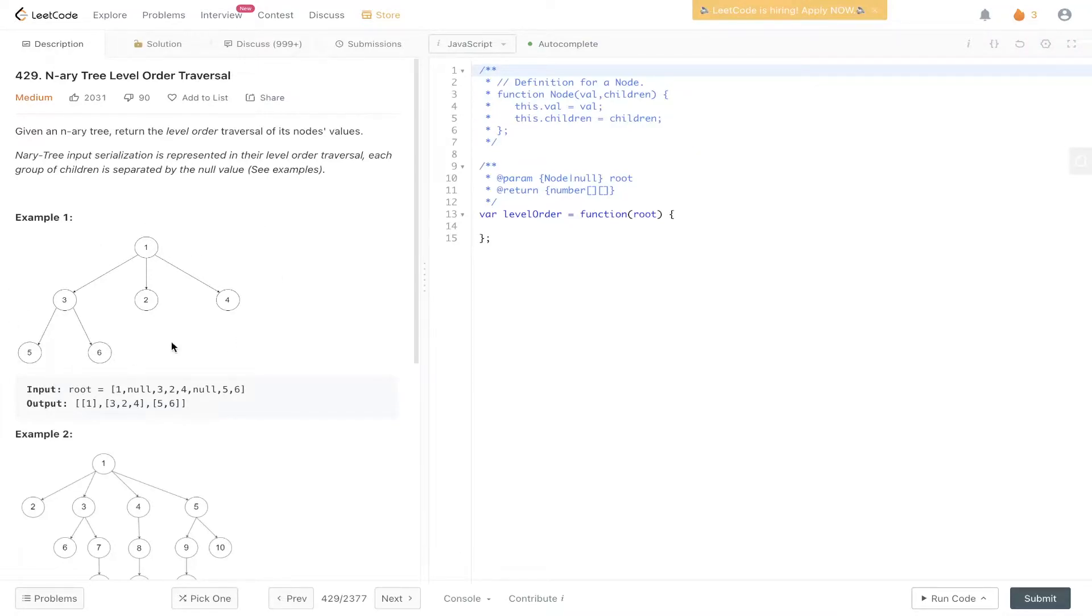An N-ary tree is just a tree where the children of each node can be up to N length. As you can see here, node 1 has 3 children, node 3 has 2 children, so it's up to N lengths. The output here is [1], [3, 2, 4], [5, 6] because we've got the level order traversal going from left to right.